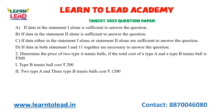But since the option could be either Statement 1 or Statement 2 alone, we must check Statement 2 as well. Statement 2: 2 Type A and 3 Type B tennis balls cost 1200. Combined with Statement 1 (Type A plus Type B equals 500), we have two equations and can find the A and B values. So either statement alone is sufficient — that is the correct answer.